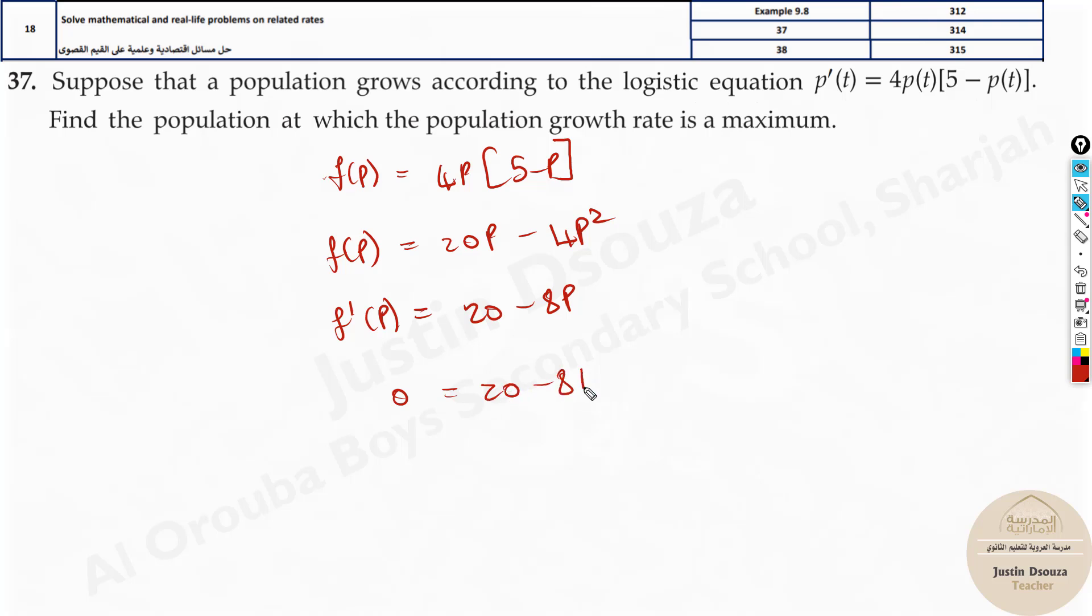What's the answer? It will be, take this to the other side, it will be p equals 20 divided by 8. The table of 4 goes in this, 5 by 2, that is 2.5. So this is the critical number.